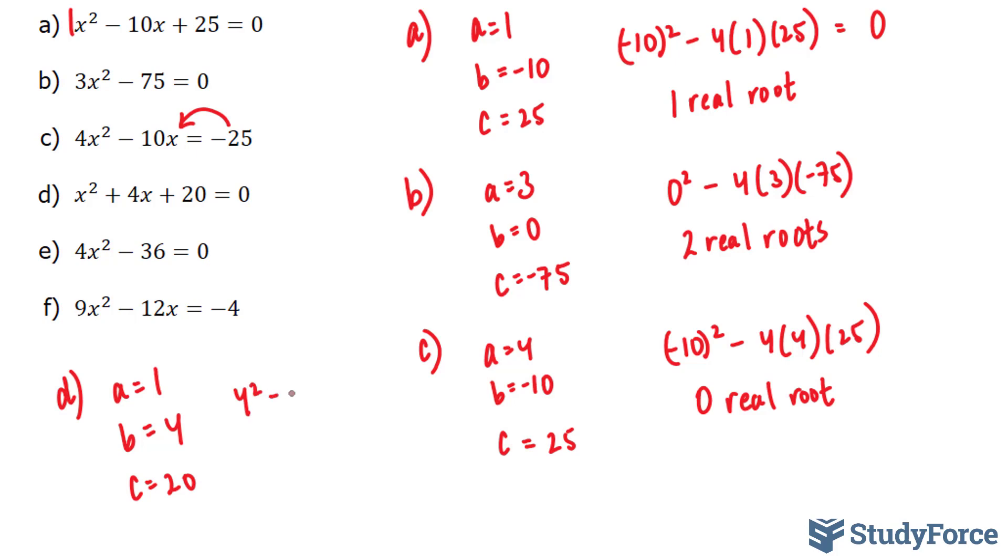4 to the power of 2 minus 4 times 1 times 20. This will be a big negative number, and this is only 16. So I know my final answer will be something that is less than zero, so I can conclude zero real roots.